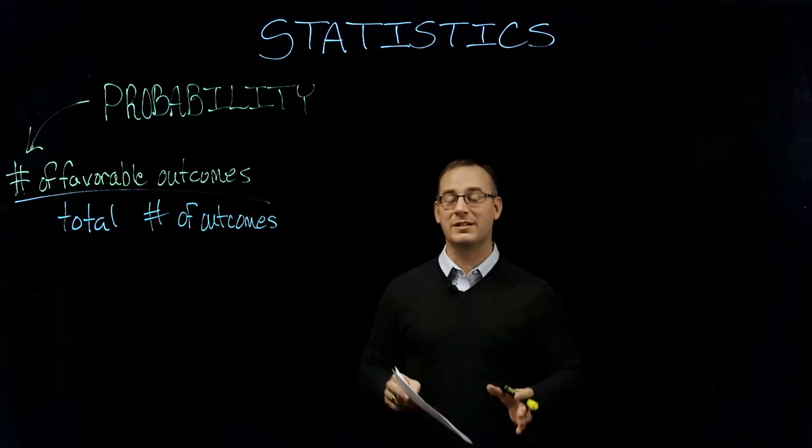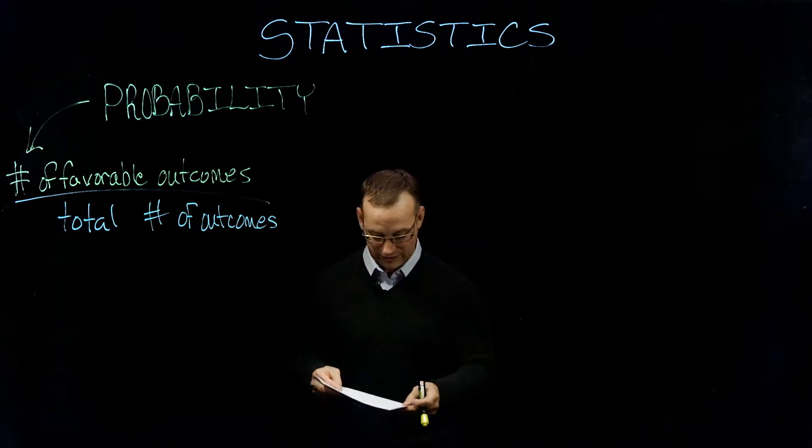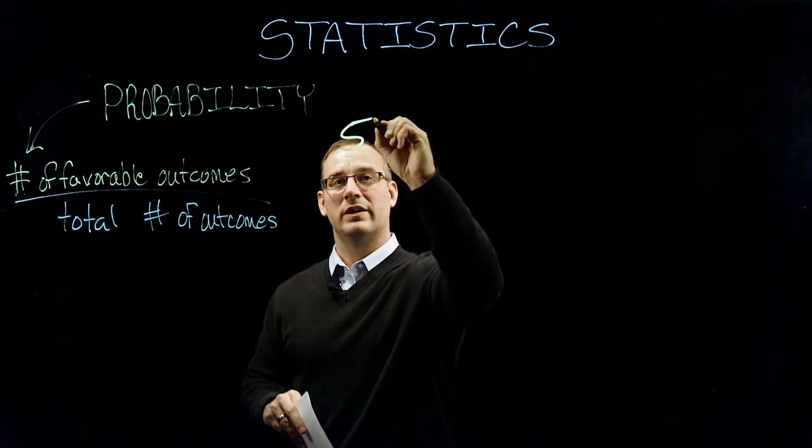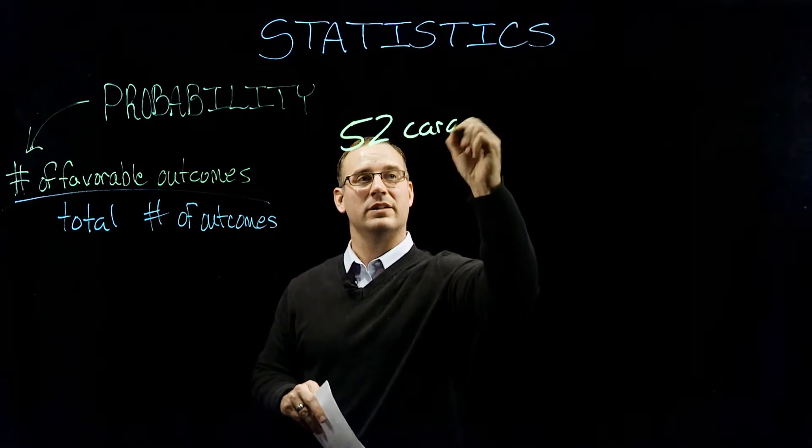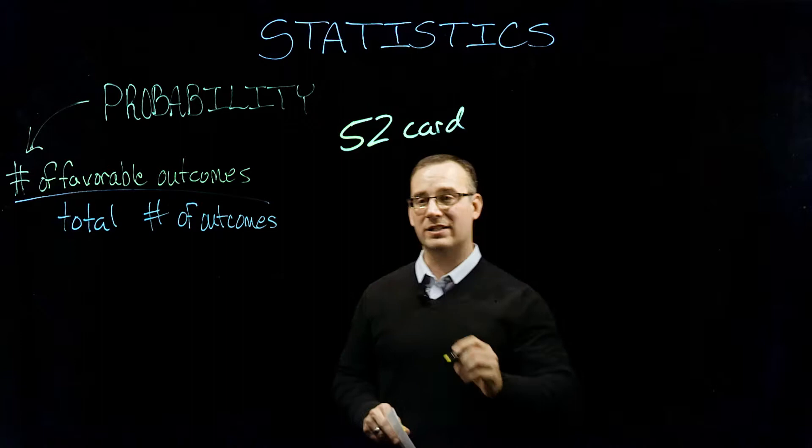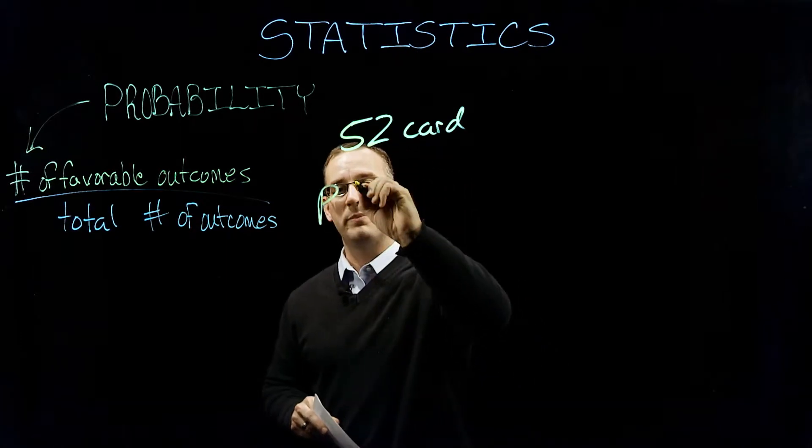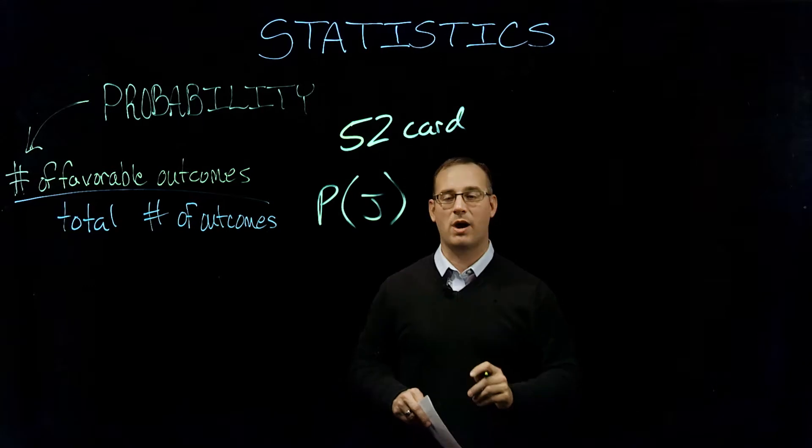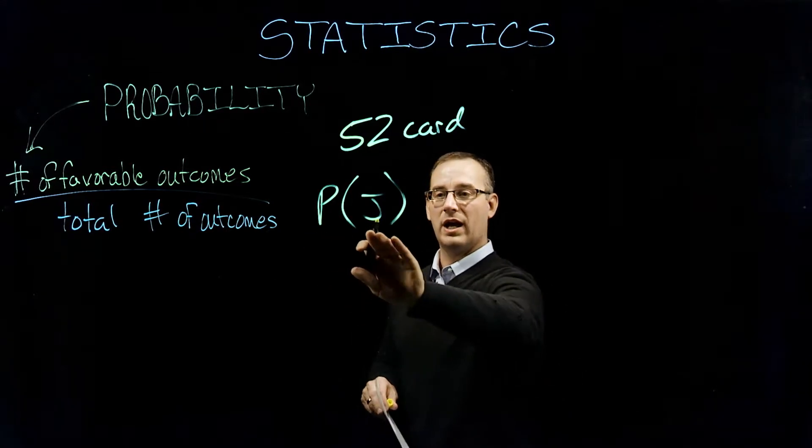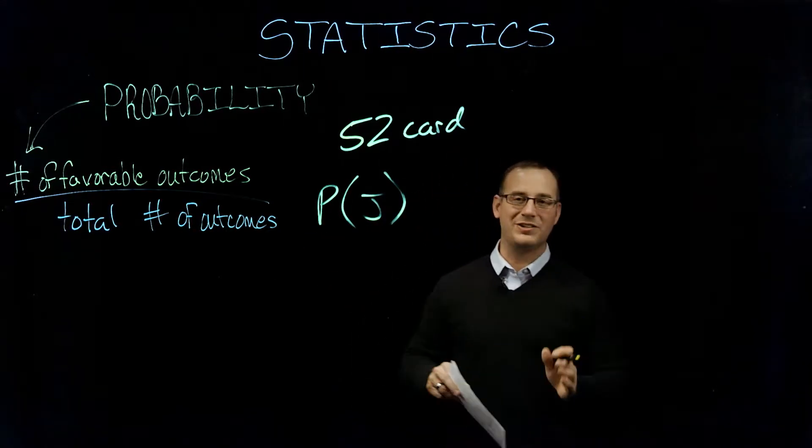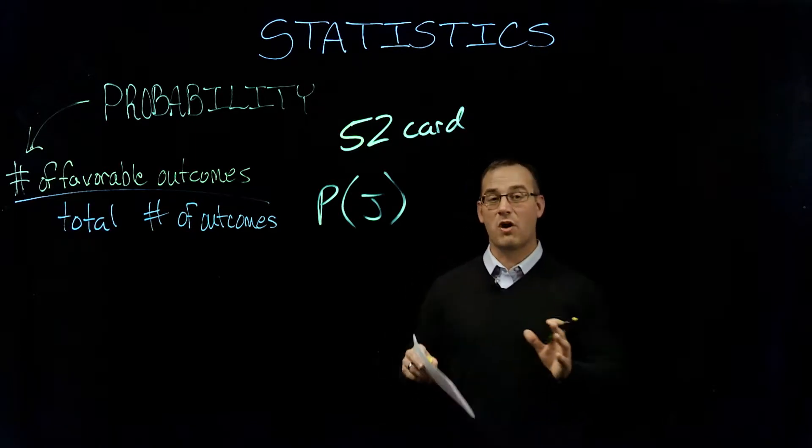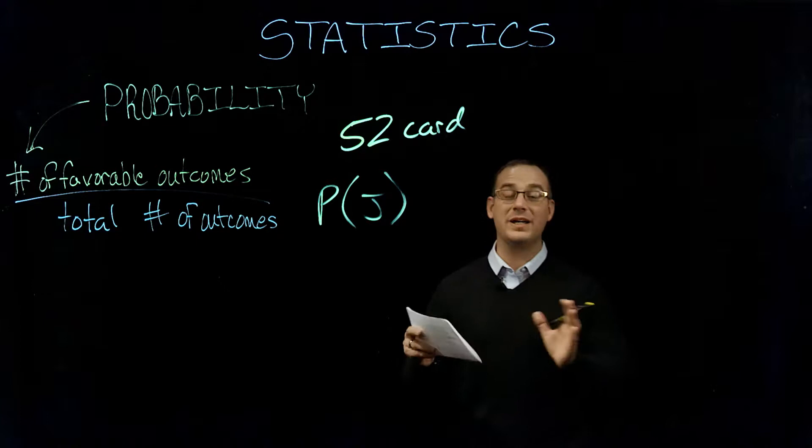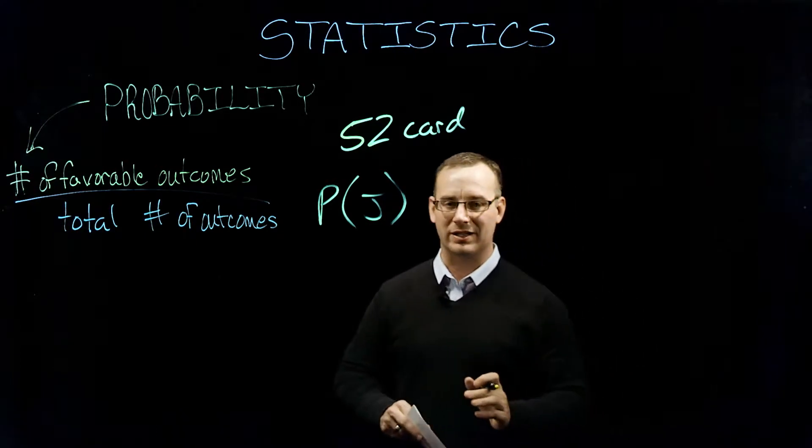So let's look at some simple probability questions. So if I gave you a 52 standard deck of cards, no jokers, and I asked you for the probability of an event. So if I asked you the probability of drawing a jack, now it could be the jack of hearts, it could be the jack of spades, it could be any one of those four ranks.